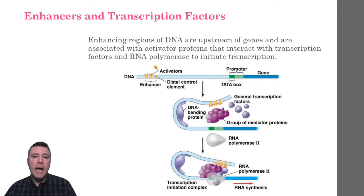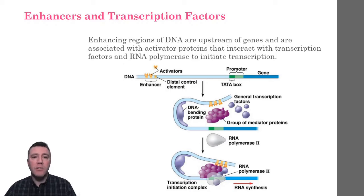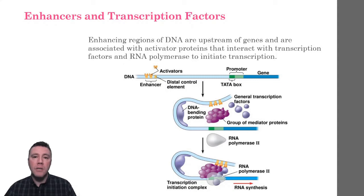A gene's enhancers associate with activator proteins and transcription factors to begin the process of transcription. First, activator proteins bind to the enhancer. Then, a protein responsible for bending the DNA brings the activators closer to the promoter region. Mediator proteins and proteins called transcription factors then interact with the activator proteins to trigger the binding of RNA polymerase to the DNA. The formation of the transcription initiation complex on the promoter signals the RNA polymerase to begin transcribing.